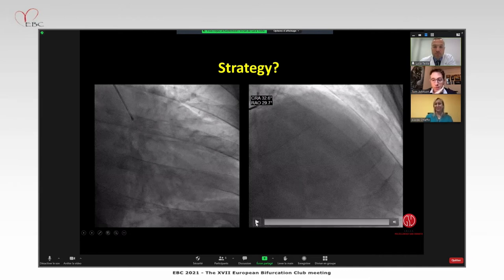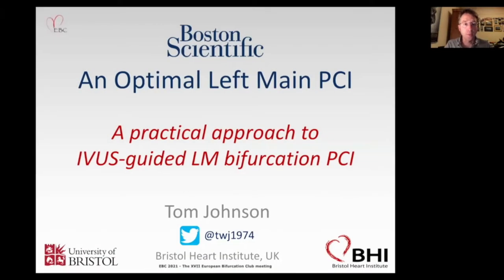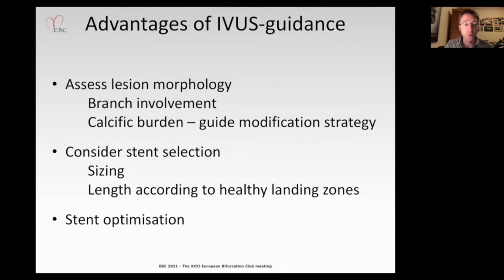I agree. The key issue here is imaging upfront, to really take out some of the ambiguity that the angiogram provides, because what's not clear is how heavily involved that circumflex ostium might be. The advantages of IVUS guidance in my mind are: to assess lesion morphology — particularly branch involvement and calcific burden — to potentially guide a modification strategy, then to consider stent selection, sizing and length according to healthy landing zones, and ultimately to achieve stent optimization.